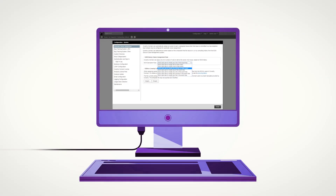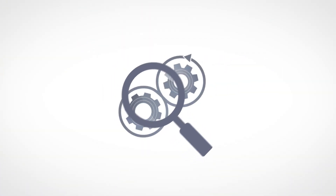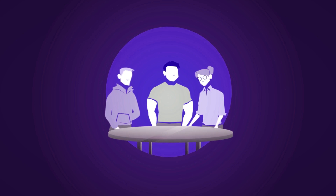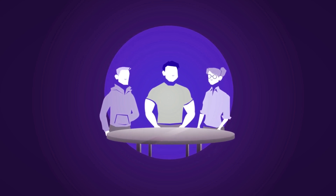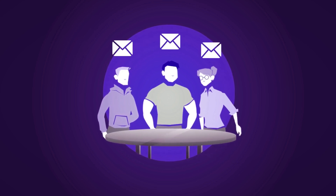Coverity also supports auto-assignment. When it finds a new defect, it checks the software configuration management system and automatically assigns the defect to the developer responsible, who then gets notified by email.